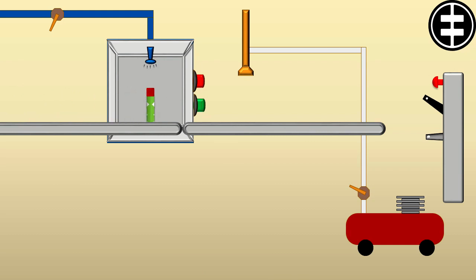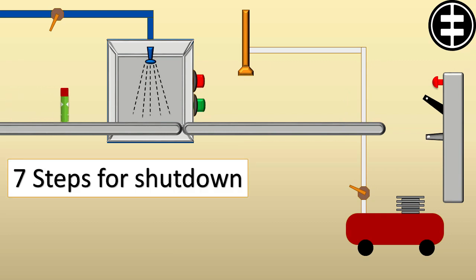Lockout Tagout is more than just putting a yellow lock on the main electrical disconnect to a machine or part of a machine. There are 7 very important steps you must do when putting Lockout Tagout in place.